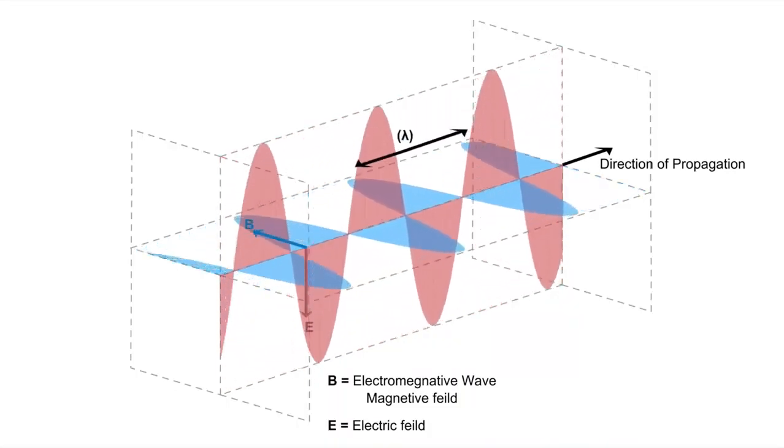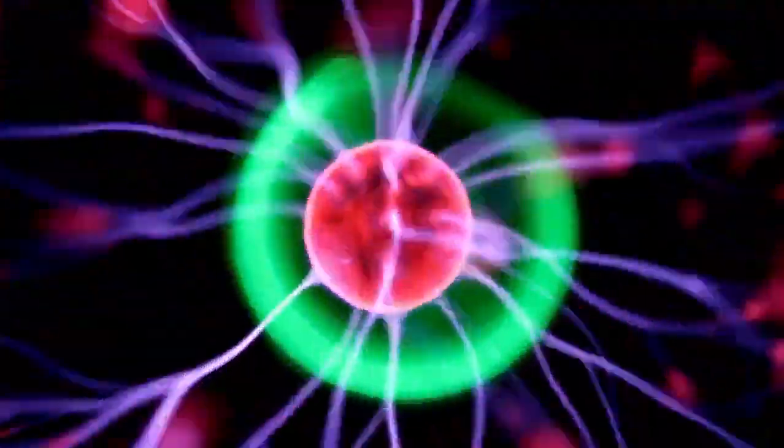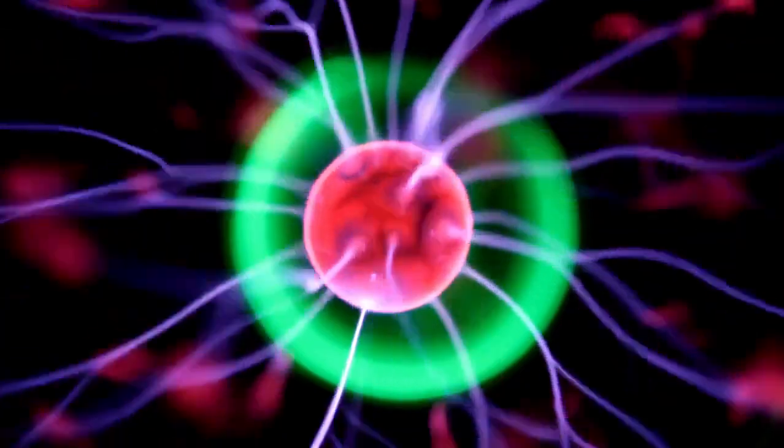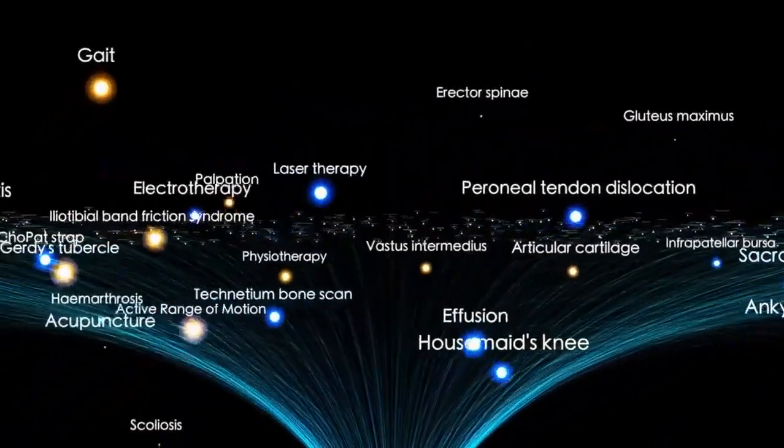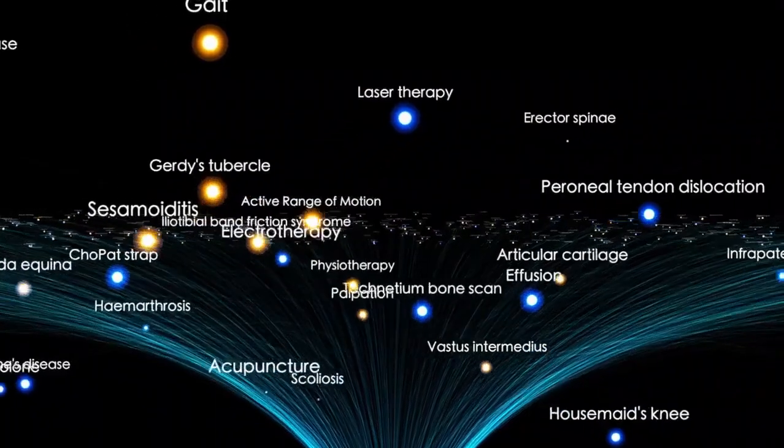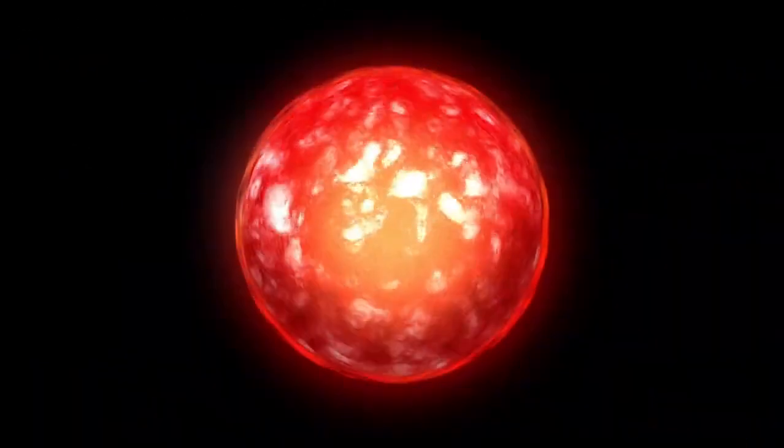Opposing this inward pull is the radiation pressure generated by nuclear fusion occurring within the star's core. Fusion reactions release tremendous amounts of energy, producing outward pressure that counters the force of gravity. This continuous push-and-pull relationship between gravity and radiation pressure defines the structure and behavior of stars, particularly massive ones like Betelgeuse.